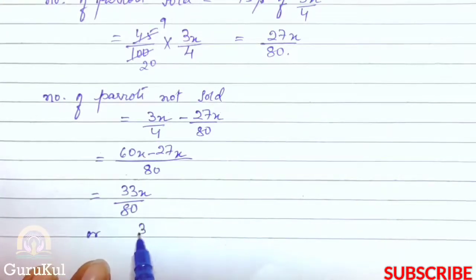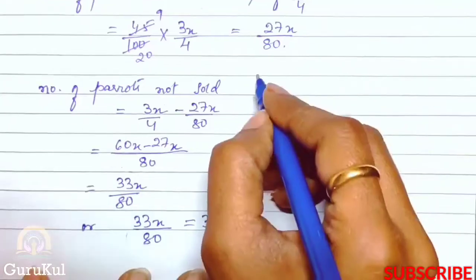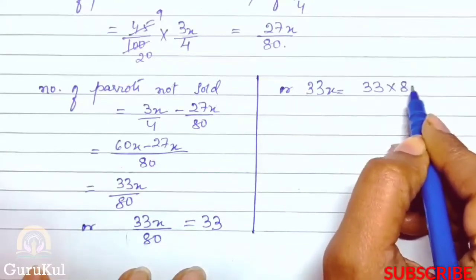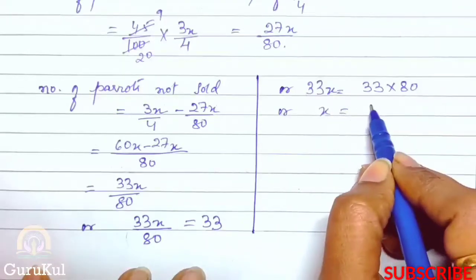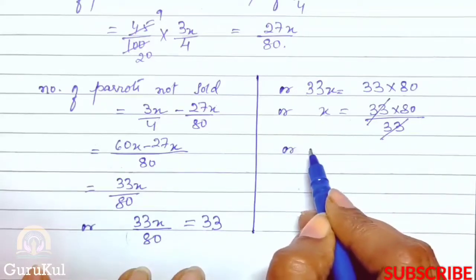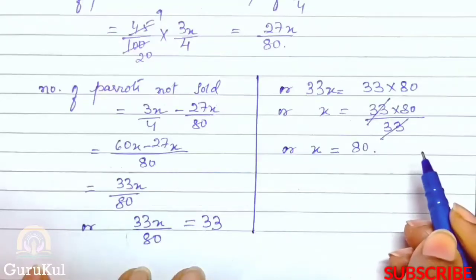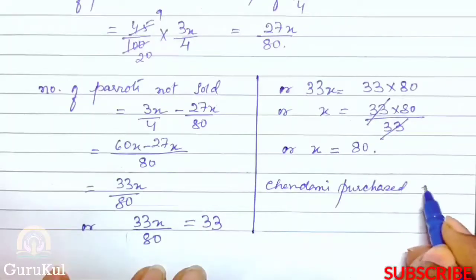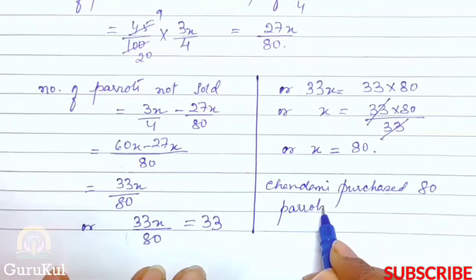This fraction or 33x by 80 is equal to 33. This 33 is given in the question: 33 parrots remain with Chandni. So this fraction equals the number of parrots remaining. Cross multiplication: 33x equals 33 into 80. x equals 33 into 80 by 33. 33 and 33 got cancelled. The value of x is equal to 80. That means, Chandni purchased 80 parrots. This is the answer.